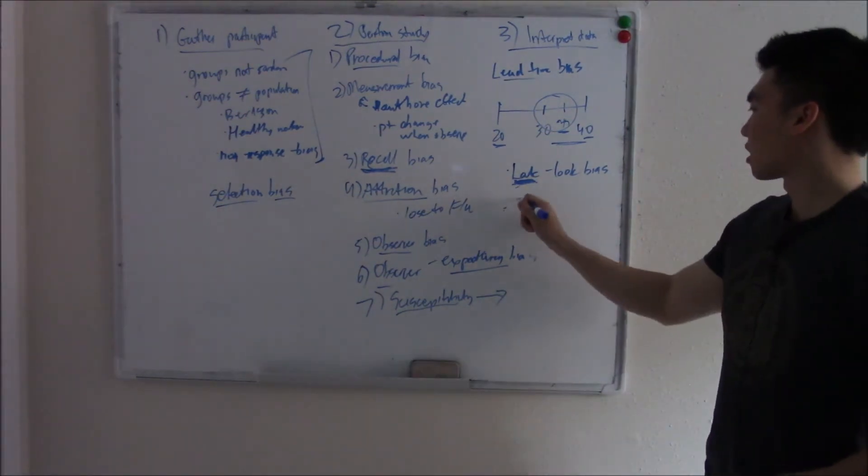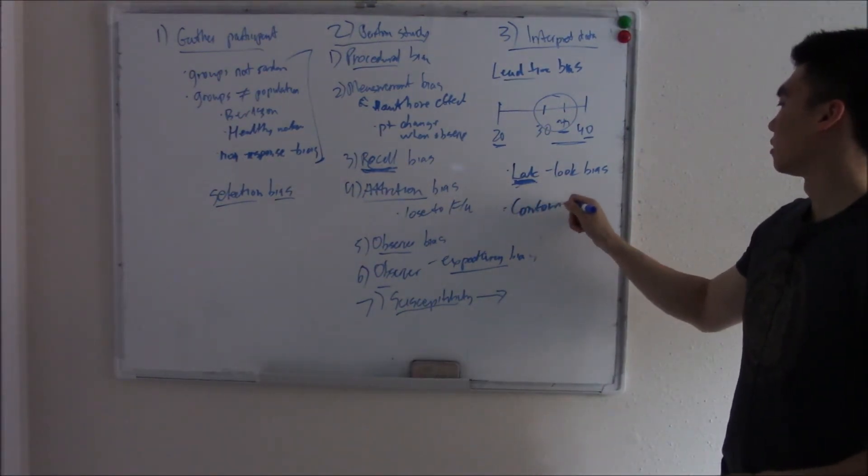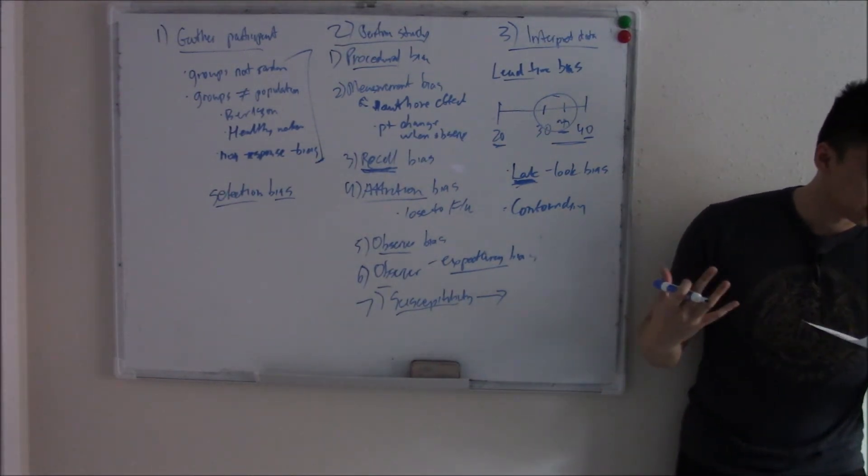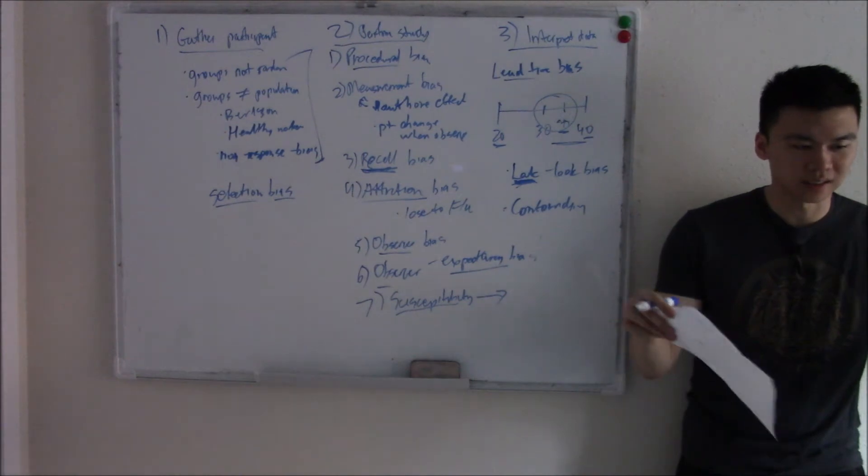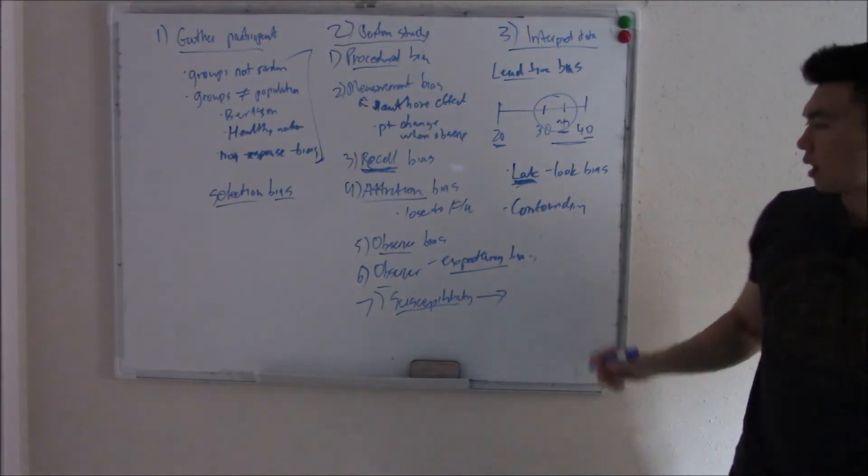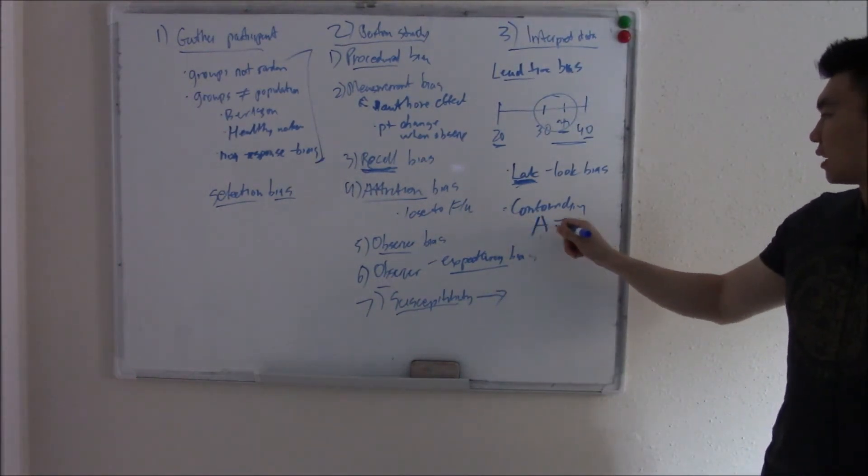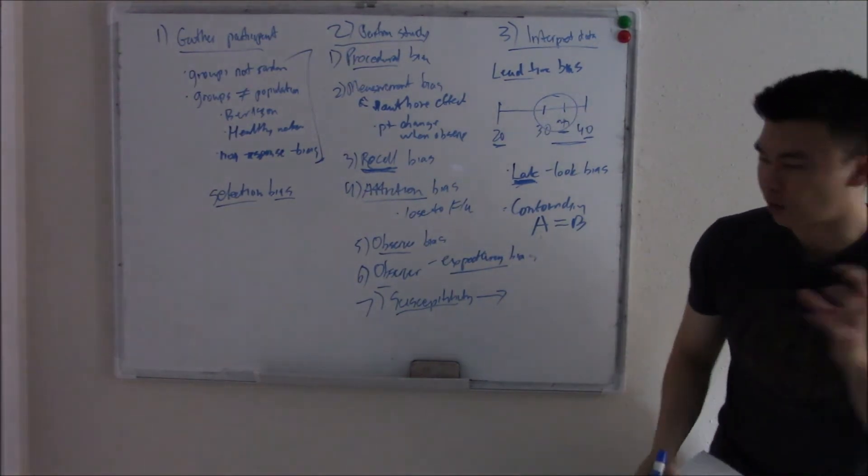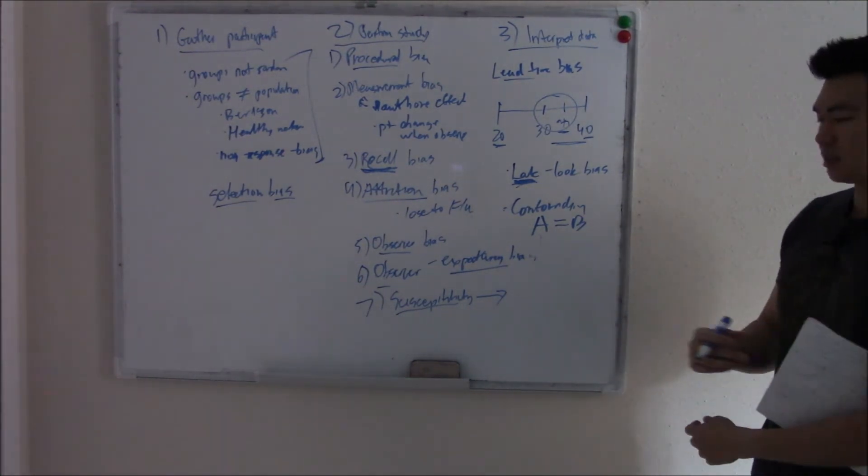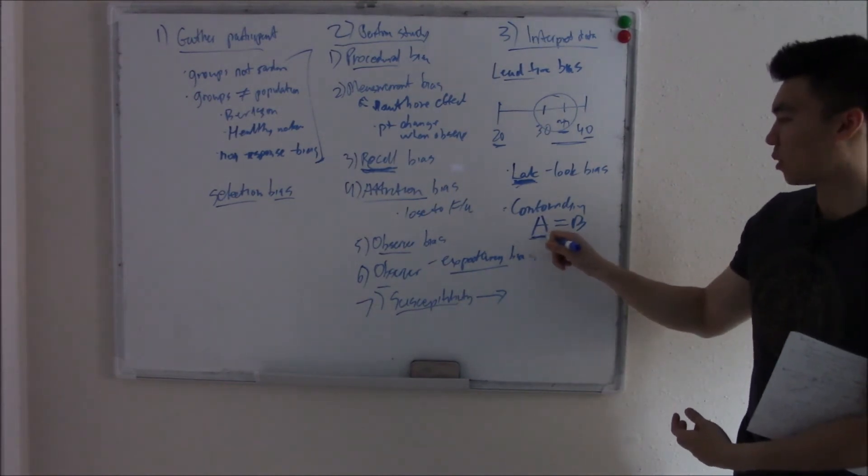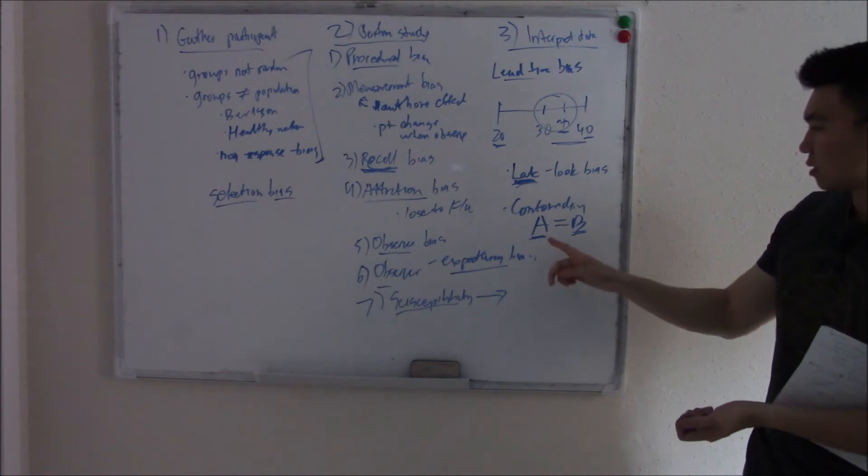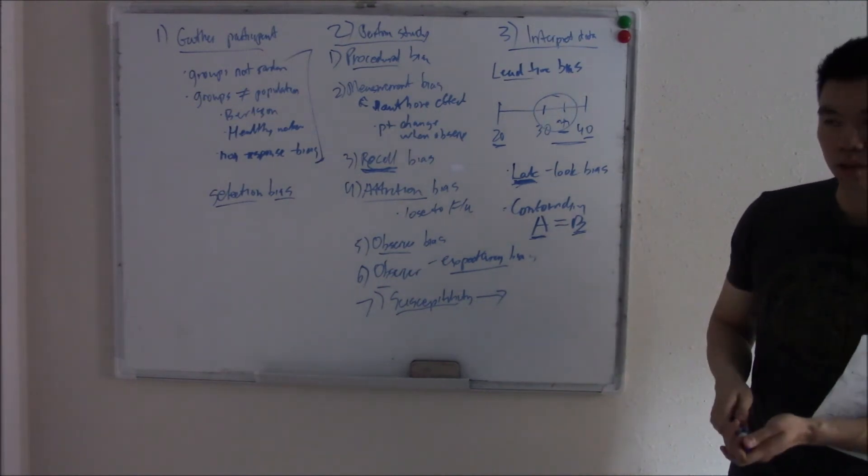And the last one I want to talk about is confounding bias. To confound something is to mix things up, to mix things up so that the individual parts are difficult to discern. A lot of times we want so bad for A to equal B. We want so bad for, let's say, cold exposure to equal lung cancer. We want it so bad.